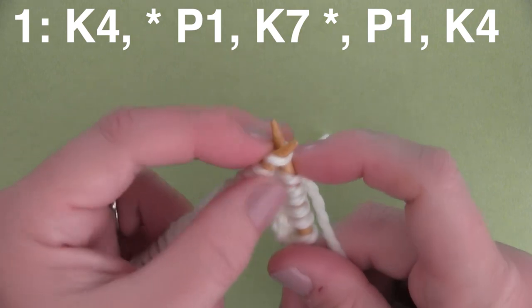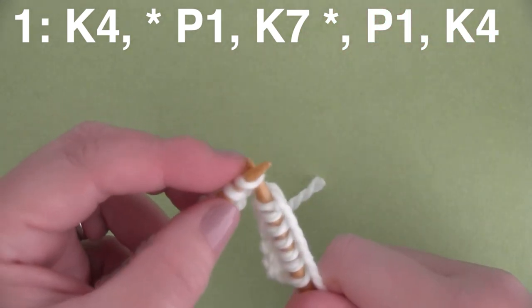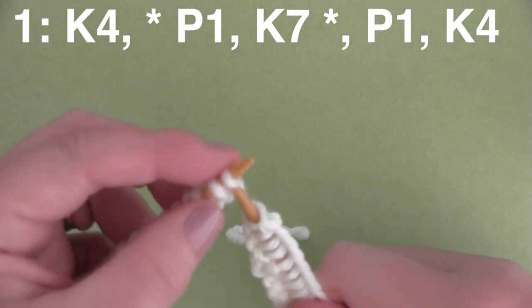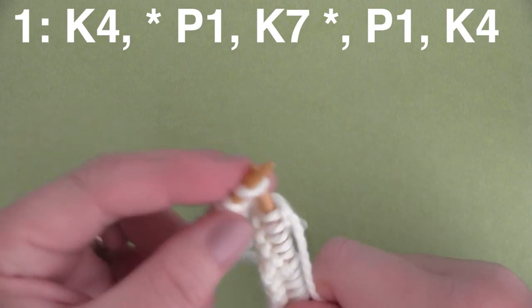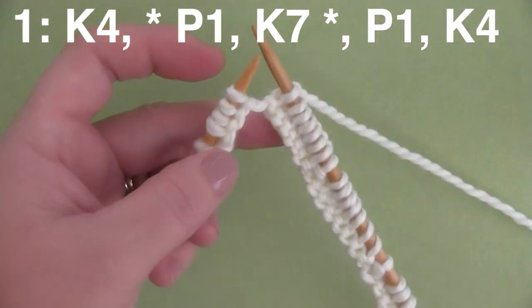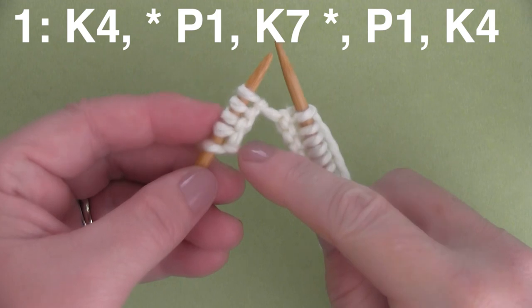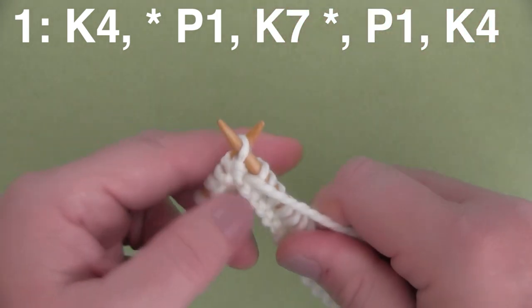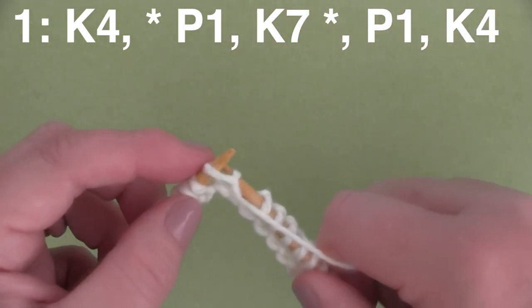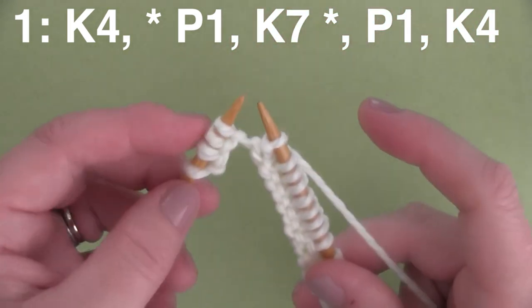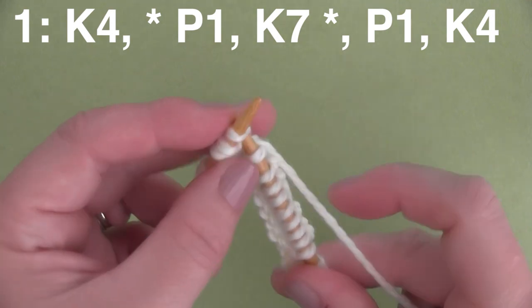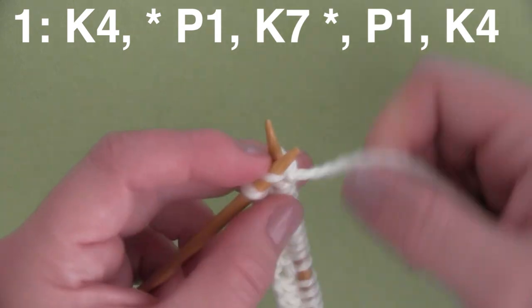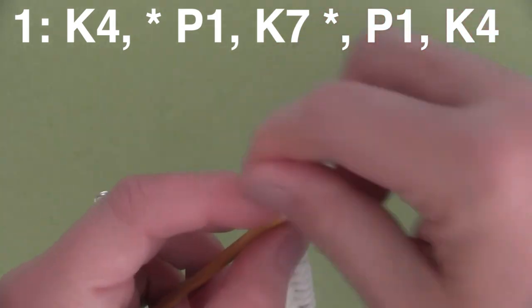And we continue this pattern of P1, K7, all the way down the row until we have 5 stitches remaining on our needle. And once we get to that point, it is P1, so we're going to bring our yarn to the front, purl 1 stitch, and then finish up Row 1 right here with 4 knit stitches. So we'll just do it right here, 1 and 2, 3 and 4.